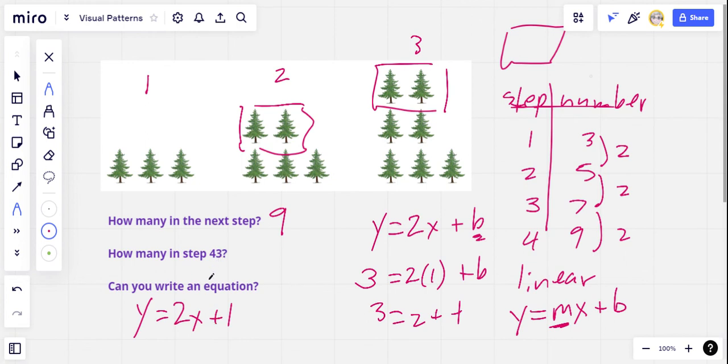Now, we can use this then for step 43 without having to do a lot of counting. We can ask how many trees are there when the step number is 43. So two times 43 plus one. Well, two times 43 is 86, plus one is 87. So if you got 87 for the number of trees in step 43, right on. Good job.